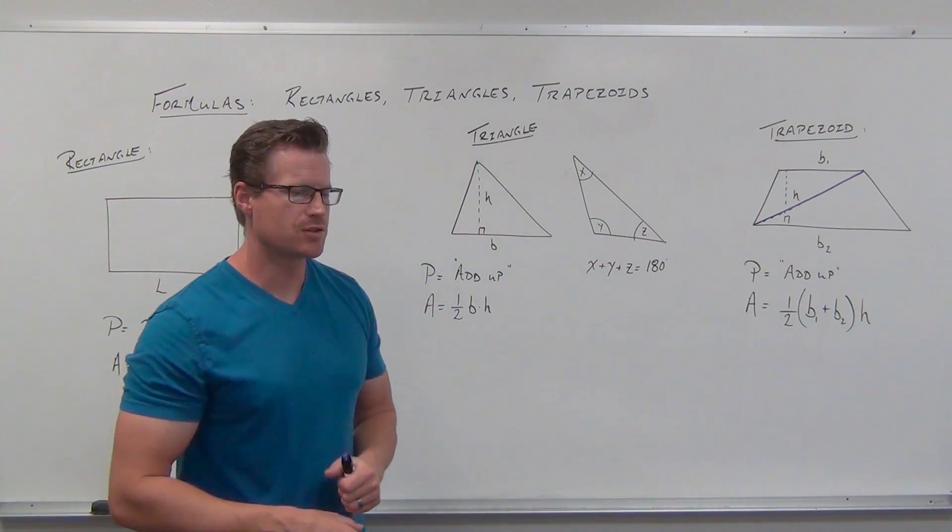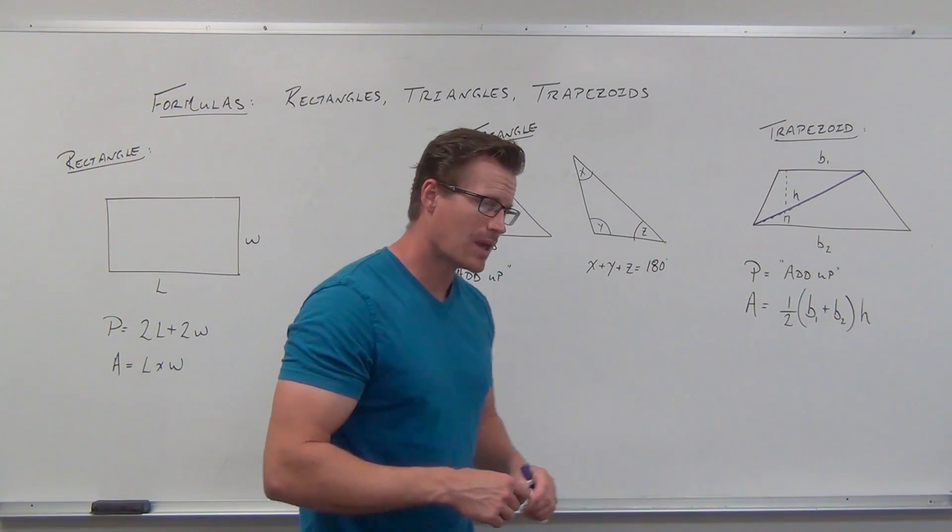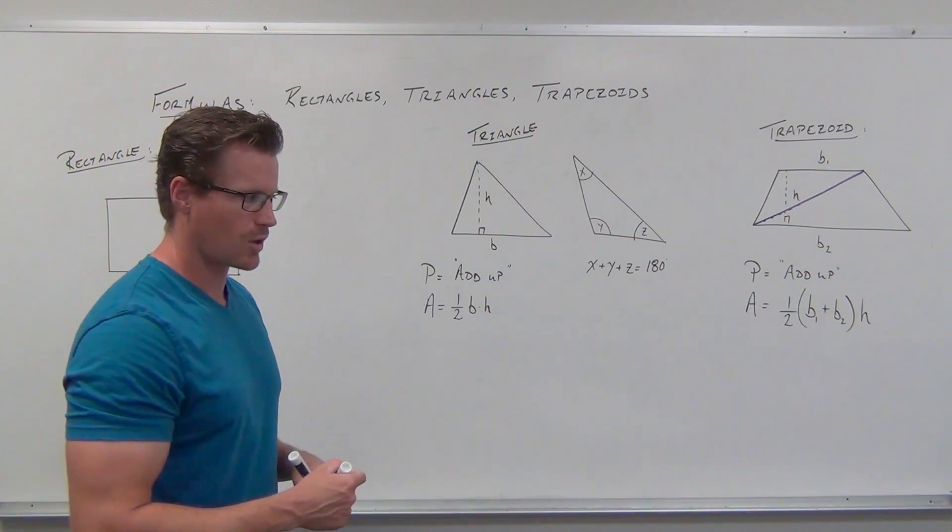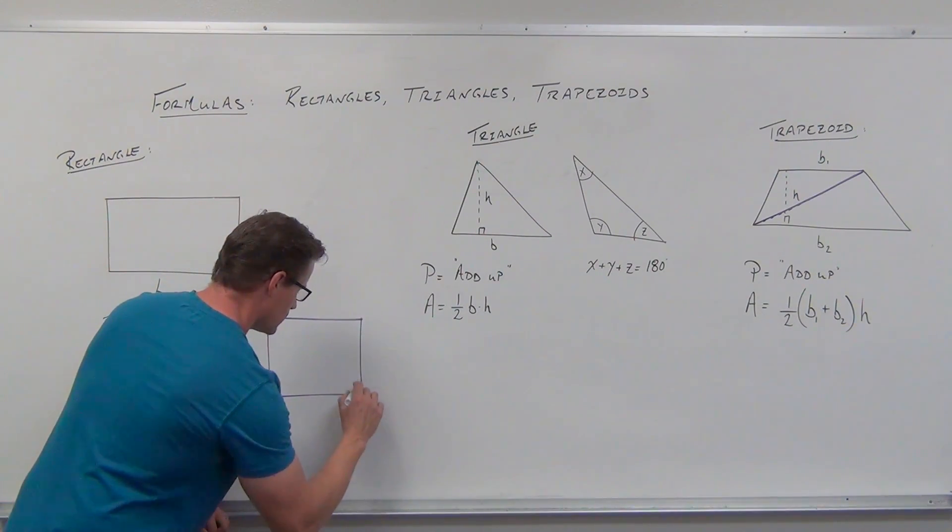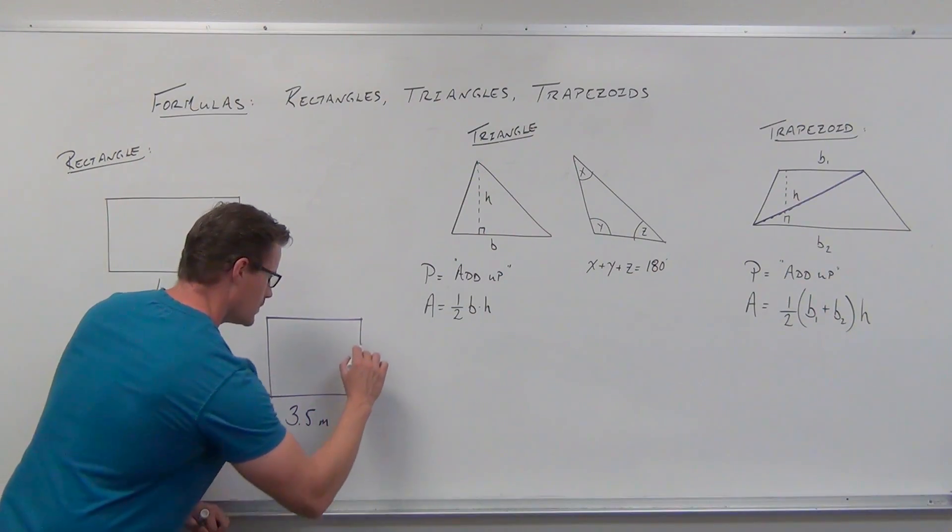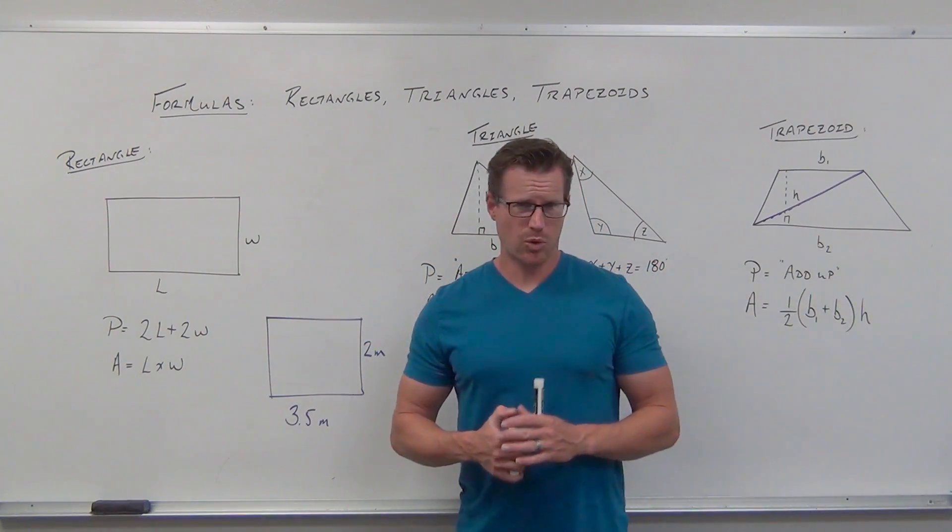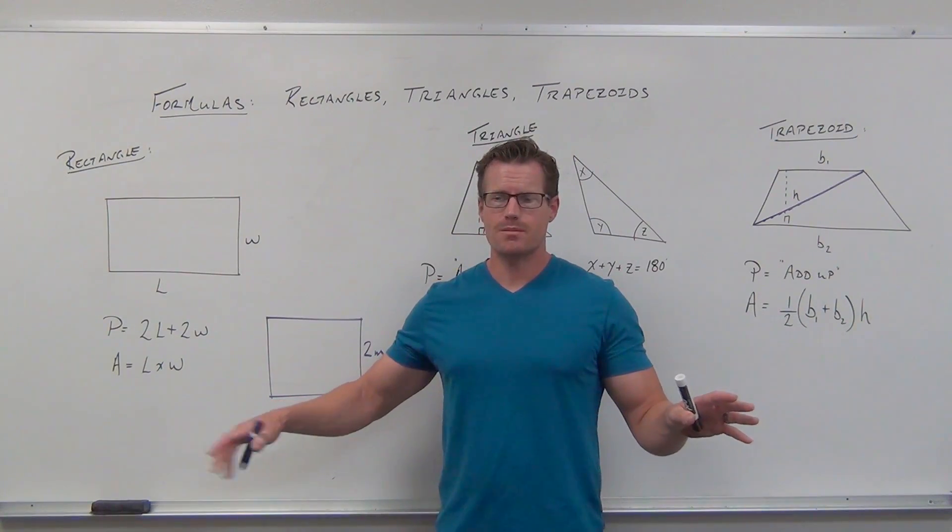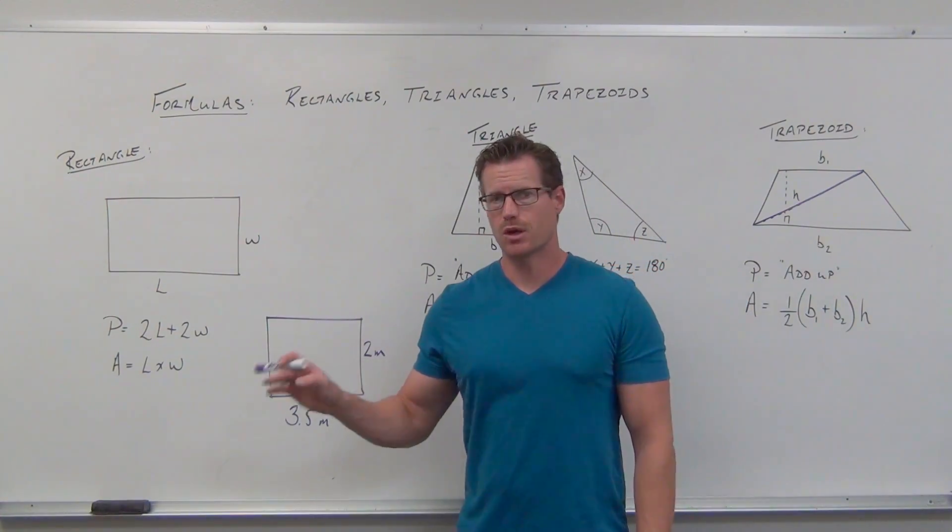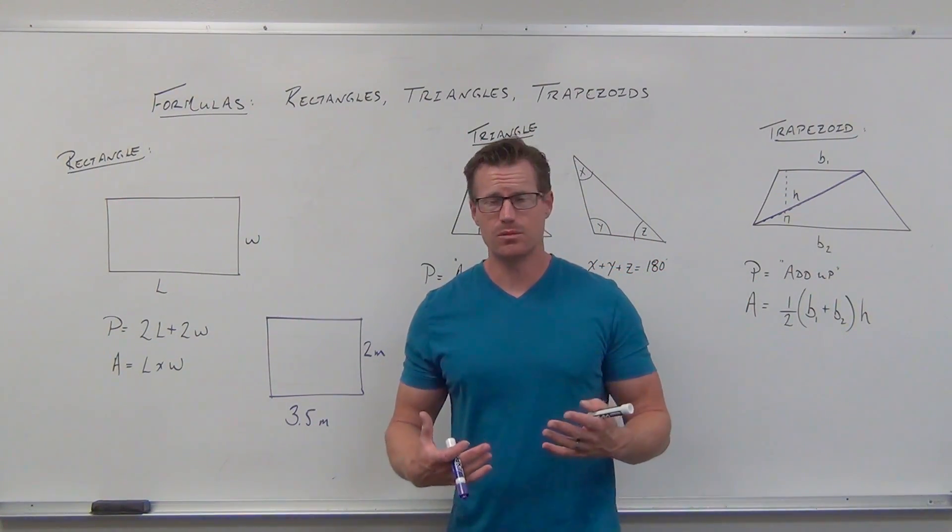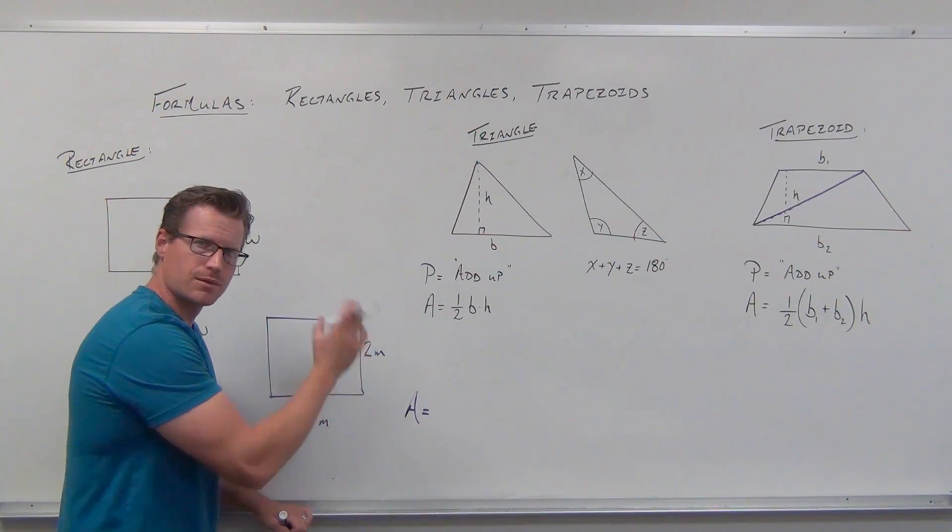Perimeter is just adding up all the sides. We're going to work through three quick examples to practice these formulas. Let's say you have a room that's 3.5 meters by 2 meters. I want to carpet the room and buy baseboard. I'll carpet first, then put baseboard over the carpet. Let's figure out the carpet idea first.